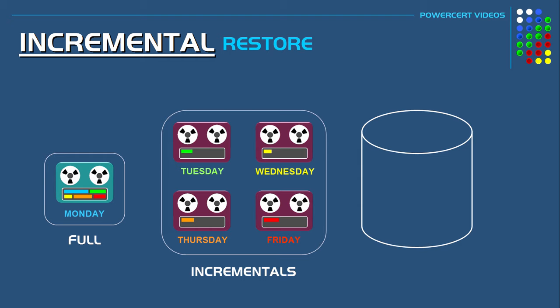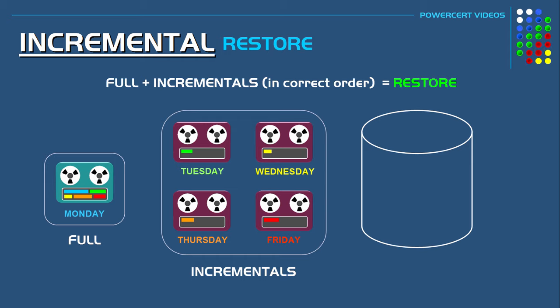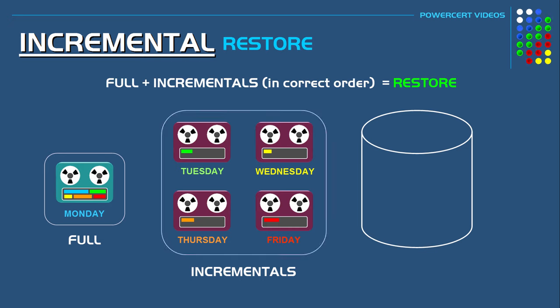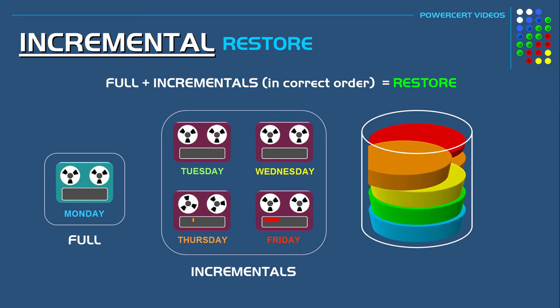However, the disadvantage of an incremental backup is that it takes the longest when you have to restore the data. Because when restoring after an incremental backup, you have to restore the full backup along with all the incremental backups, and you have to restore the incrementals in the same order as you backed them up. So here we have a full backup tape and a week's worth of incremental backups — you restore the full backup first, then the incrementals from Tuesday through Friday in the correct order, giving you a full data restore for that week.